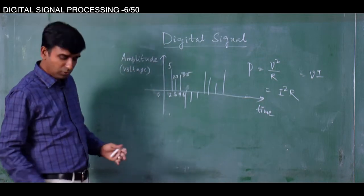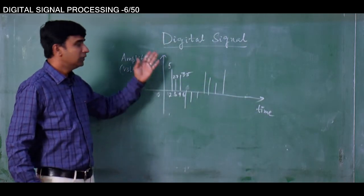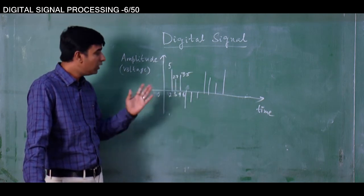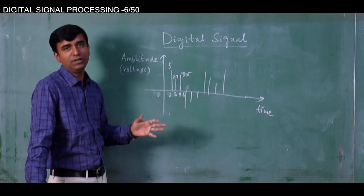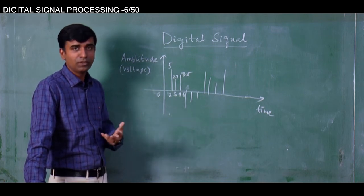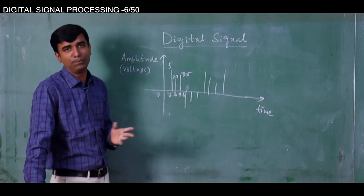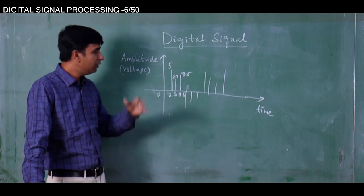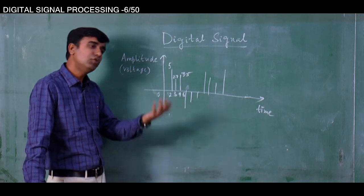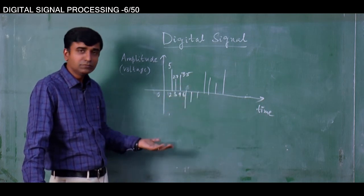Coming back to the digital signal: by now it is clear that why a digital signal consumes less power during transmission — because it has fewer samples, as chosen by the user. It is also a fact that in different circuits or applications you choose different numbers of samples depending on the application. Somewhere you may require 80 percent of the samples; somewhere you are okay with 60 percent. Accordingly you take the number of samples and transmit.